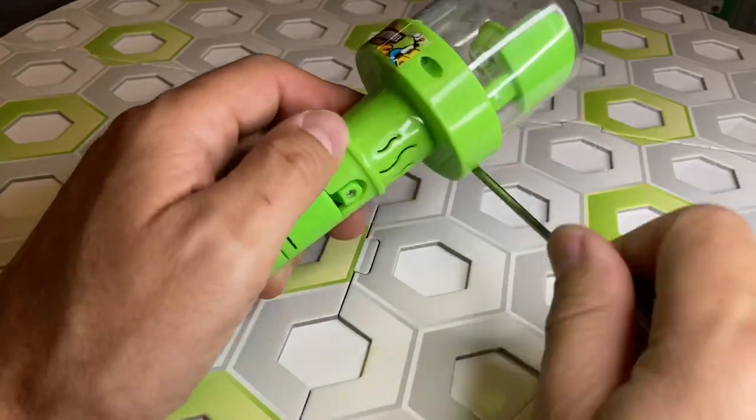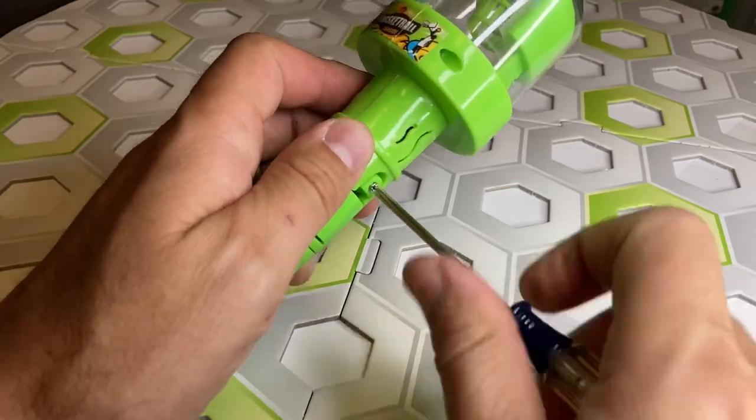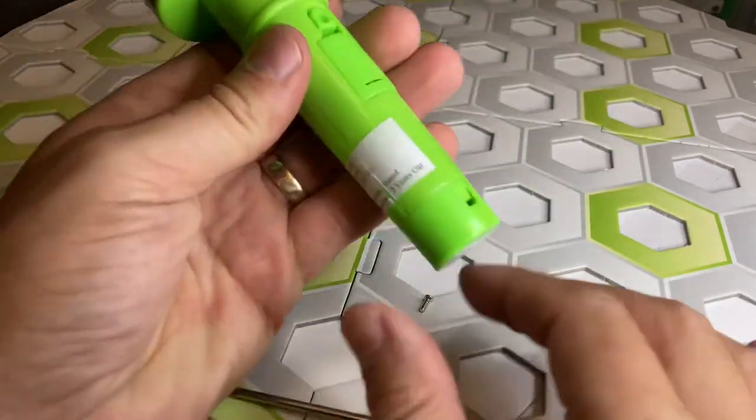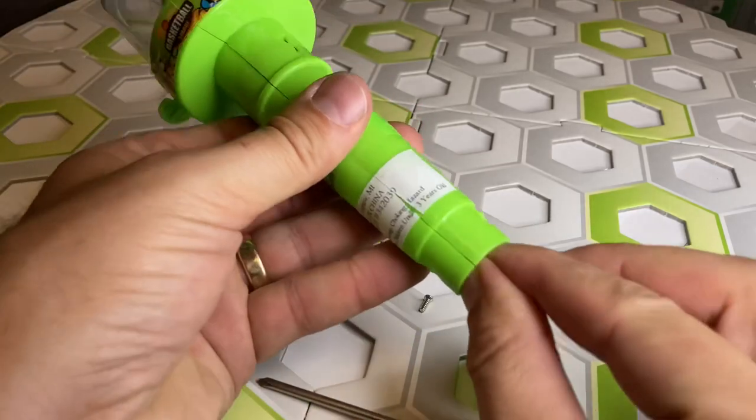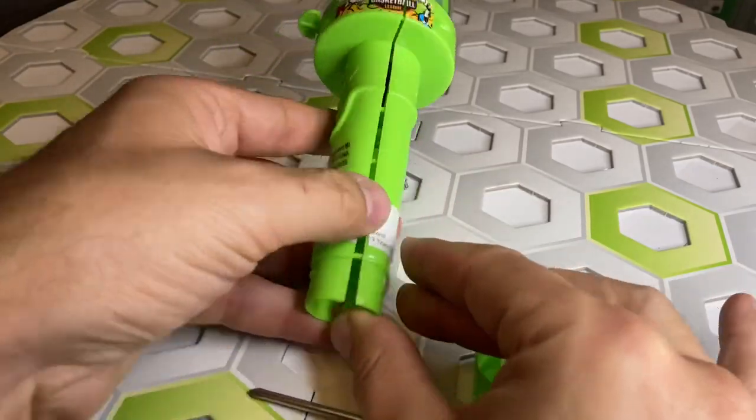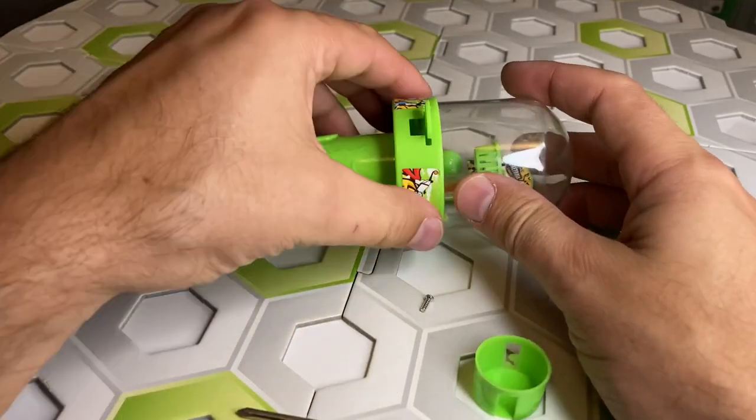It's only got three screws, two on the top, one over the battery compartment. I've already slipped these stickers and it's got the cap on the bottom and then it just comes right apart. So real easy to disassemble.